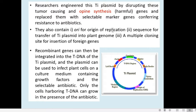Instead, selectable marker genes and foreign genes are incorporated into the plasmid. In any recombinant DNA experiment there should be marker genes to know whether our vector has entered into the host cell with the foreign DNA. While engineering the Ti plasmid as a vector, the opine synthesis genes and tumor causing genes were removed and replaced with marker genes, which are usually antibiotic resistance genes.